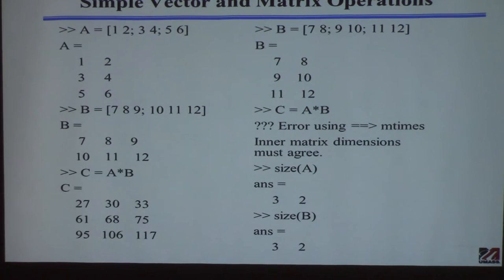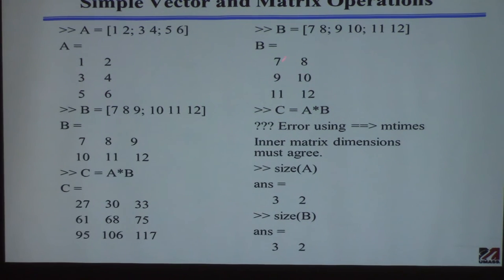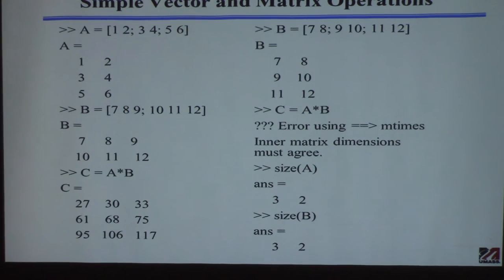If you specify the wrong dimensions — for example, if B has three rows and two columns instead of two rows — then the multiplication is inconsistent. MATLAB will give you an error saying the dimensions are not consistent. This is a very common error. When I get that message I immediately look at the sizes of both matrices in the workspace to identify the problem.